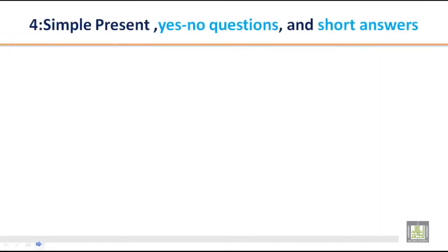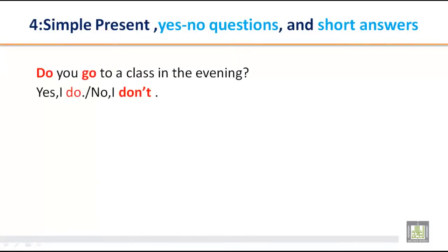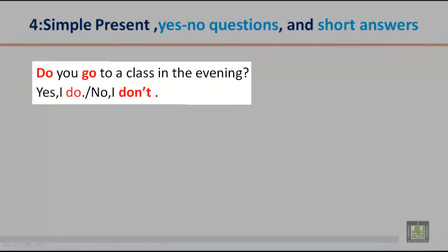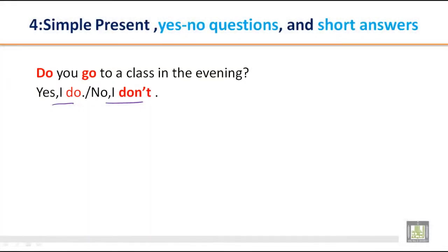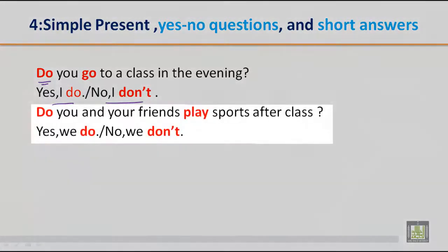Now let's do some more practice with yes-no questions. 'Do you go to a class in the evening?' — Yes, I do. / No, I don't. Remember, we use 'do' with I, you, we, and they. 'Do you and your friends play sports after class?' — Yes, we do. / No, we don't. With 'you', we use 'do' and the verb is in simple present without s.